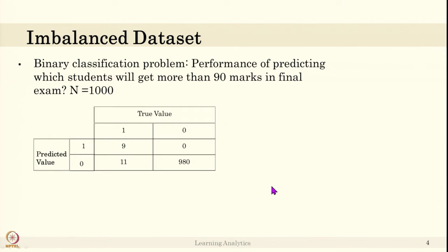Let us compute precision, accuracy, and recall. Accuracy is 980 correct plus 9 correct, 989 by 1000, 98.9 percent. This is very high accuracy you can get. Precision is 9 divided by 9 plus 0, which is 100 percent precisely predicting. Recall rate is 9 by 20.